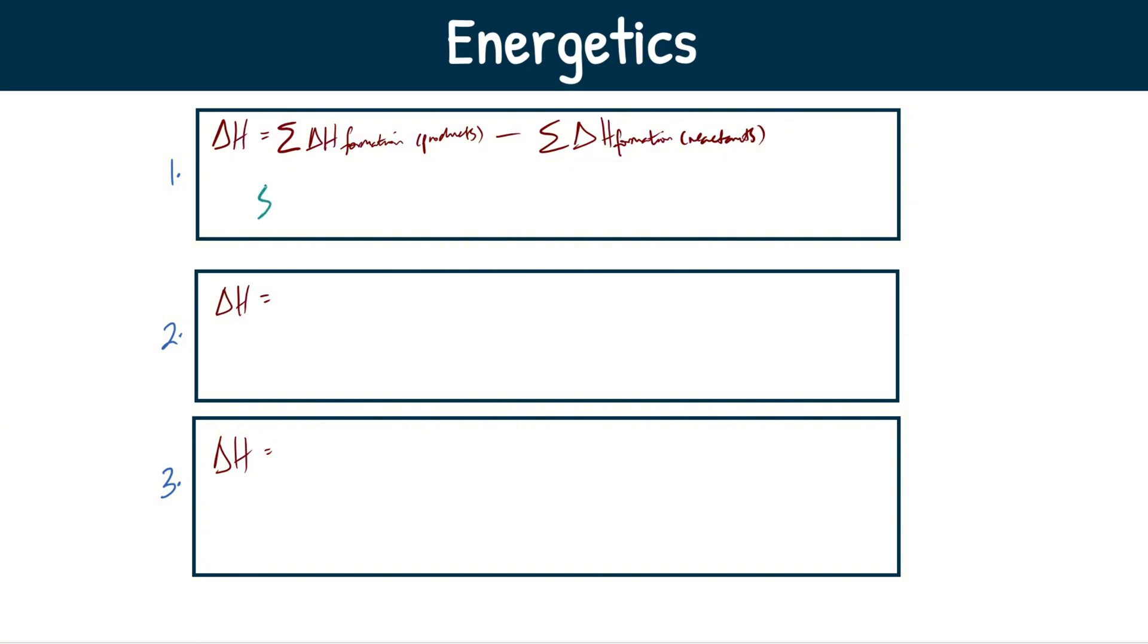This is going to be the sum of our enthalpy change of formation, and this is specifically the products as the first portion of the formula, minus sum of enthalpy change formation for our reactants this time. Very easy equation. I'm going to give you the symbols for this so you can chuck it on the page in your exam. It's the sum of enthalpy formation products minus sum of enthalpy formation reactants. This lowercase f just signifies that this is the enthalpy of formation. Super easy stuff.